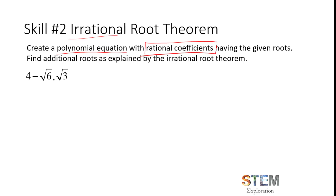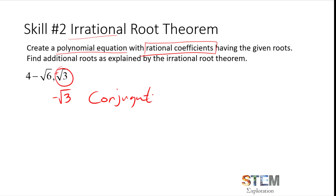If we need to make a polynomial equation with rational coefficients based on the roots, it's always going to be true that if you have a square root like the square root of 3, it has to have a conjugate that complements it — which is negative square root of 3 — because when you take the square root of both sides of x squared equals 3, you always get plus or minus square root of 3. Every irrational number identified as a root is going to have a conjugate that goes with it. For example, if 4 minus square root of 6 is a root, then 4 plus square root of 6 is its conjugate — only the irrational part switches.